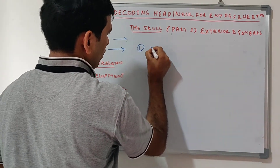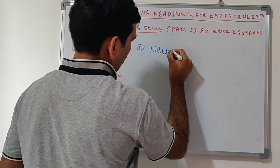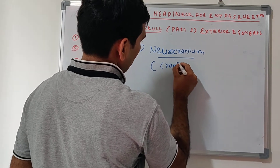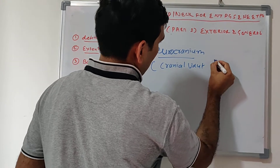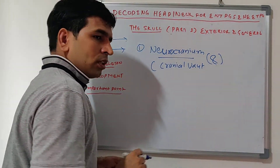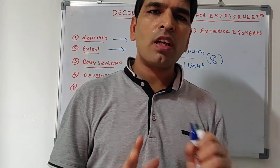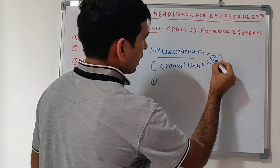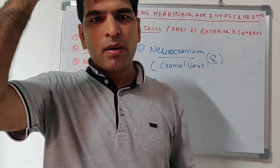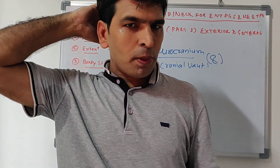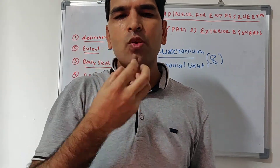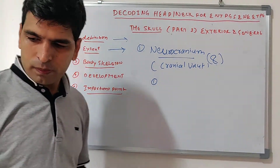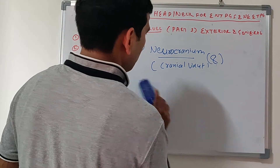Now we will talk about the neurocranium, also called the cranial vault, having 8 bones. You just have to understand the bones - no need for mnemonics. If you count total 8 bones: frontal, parietal, temporal, occipital, and behind the nose is ethmoid, and the base has the sphenoid bone.